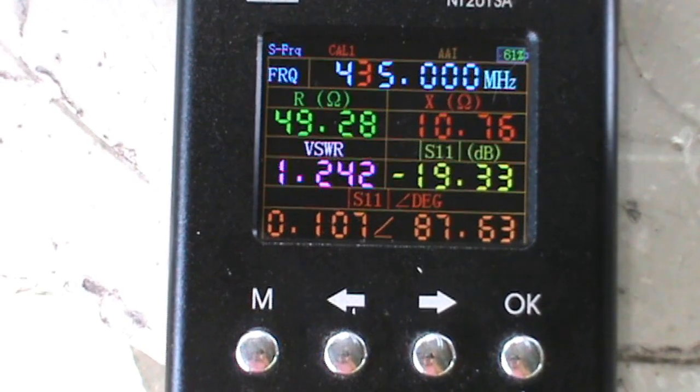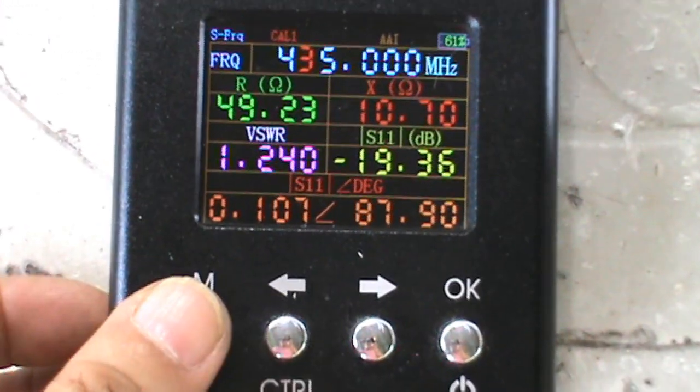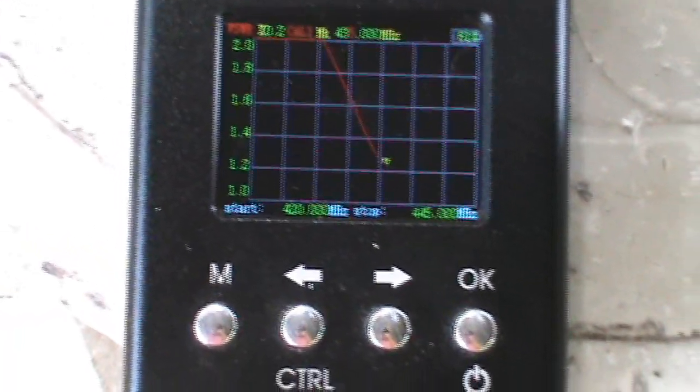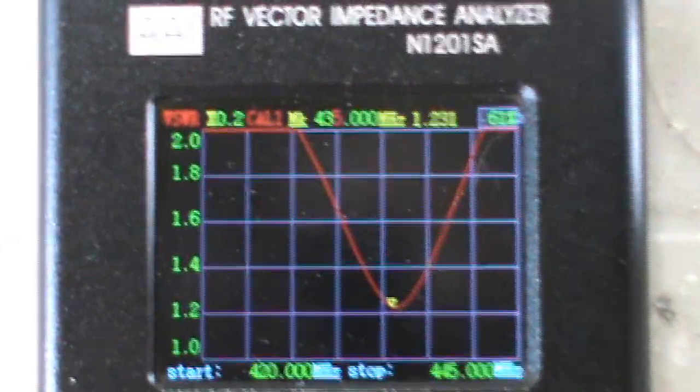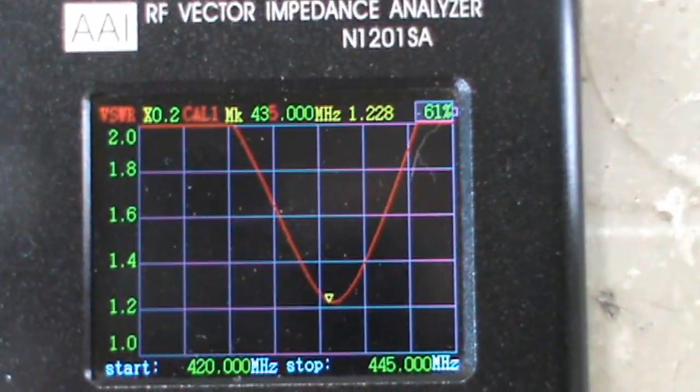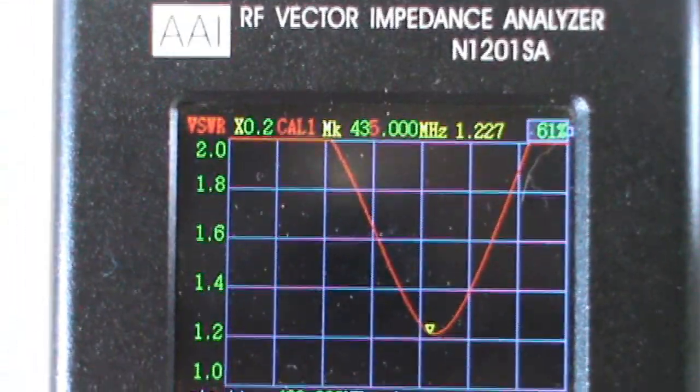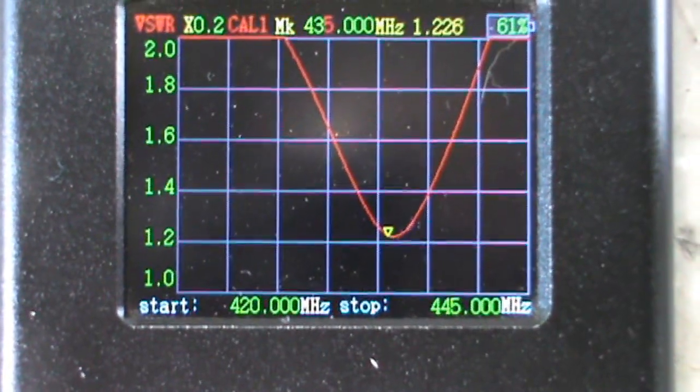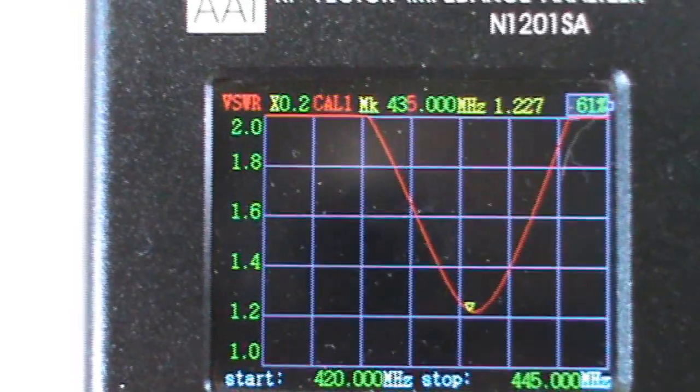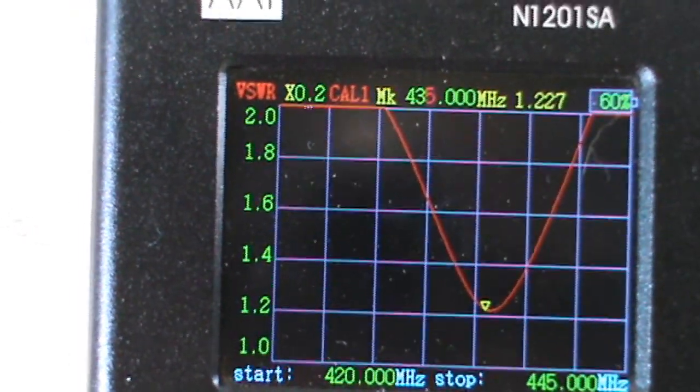So let's check the frequency curve. This one is for UHF. We have 1.2 on the bottom of the curve for the VSWR.